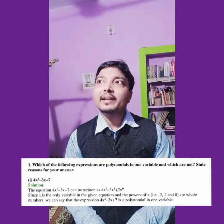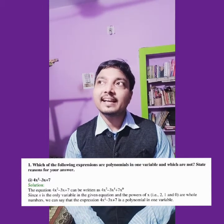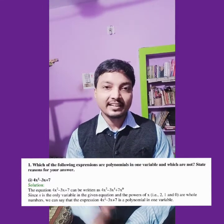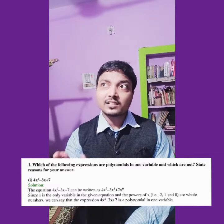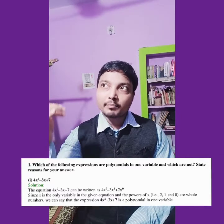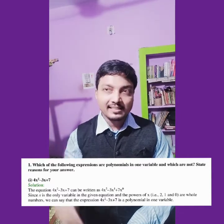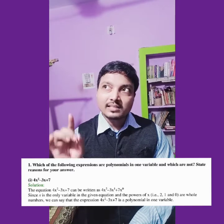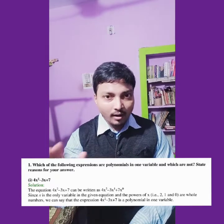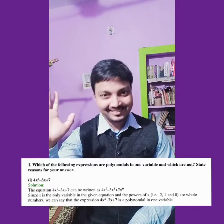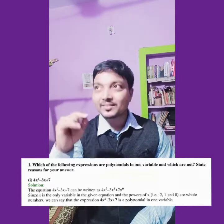The first expression is 4x square minus 3x minus 7. It has three terms. The first term has power 2, the second has power 1, and the last term is a constant with power 0. Powers are 2, 1, and 0 — all are whole numbers. So this is 100% a polynomial in one variable.